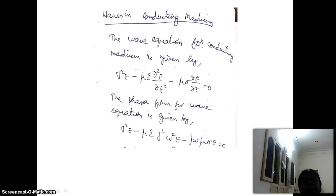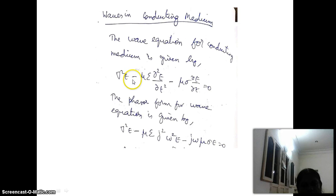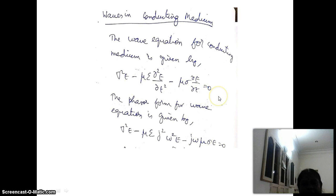The wave equation for conducting medium is given by: del squared E minus mu epsilon times the second partial derivative of E with respect to t squared, minus mu sigma times the partial derivative of E with respect to t, equals zero. In previous classes we discussed waves in lossless and lossy dielectrics. For dielectrics, the conductivity term is absent - only the first two terms remain. For the conducting medium, we have this full wave equation.